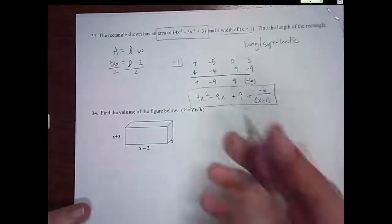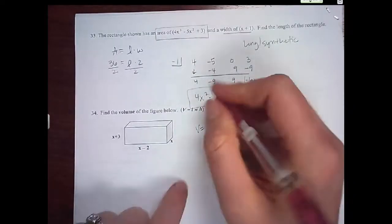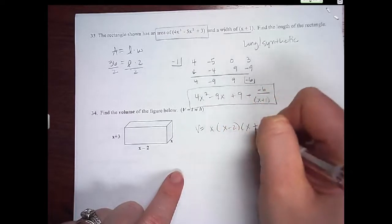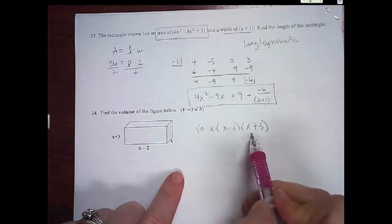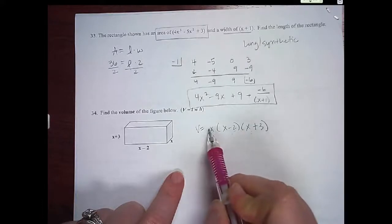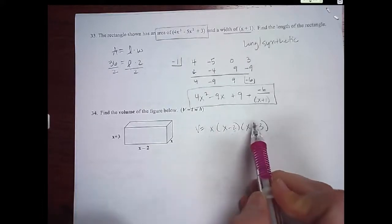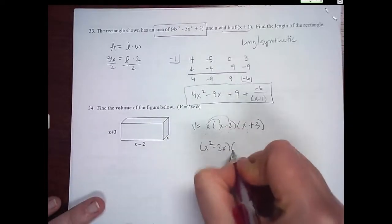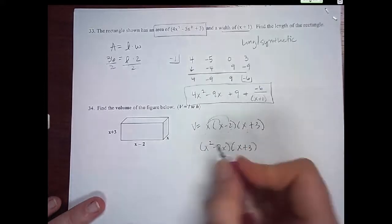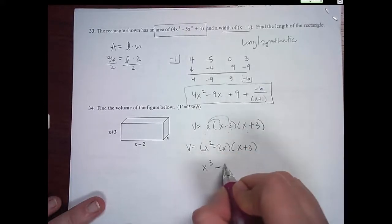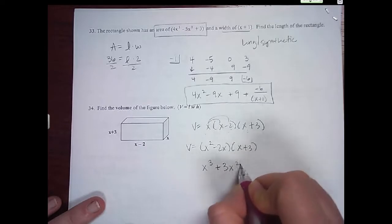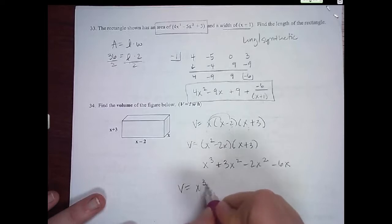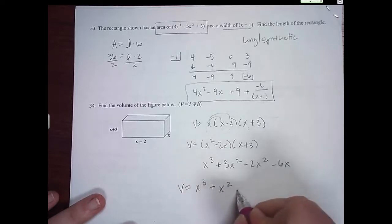And then the last one: find the volume. We're just going to multiply length times width times height. You can multiply these two first or these two first, but the x does not go to both parentheses. So I'm going to distribute this: x² minus 2x. And now I'll FOIL those: x³ plus 3x² minus 2x² minus 6x. So volume equals x³ plus x² minus 6x.